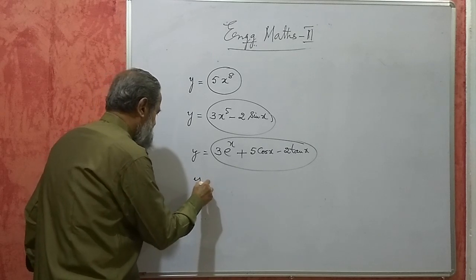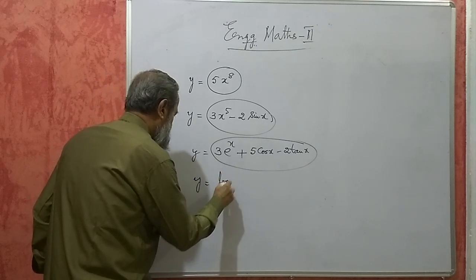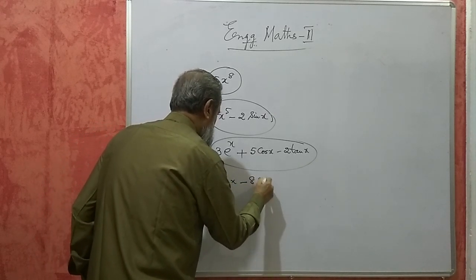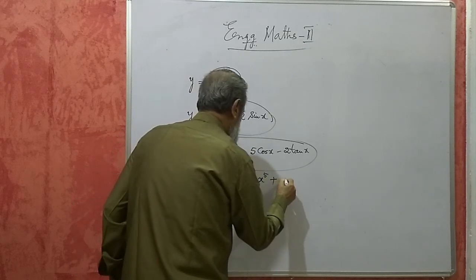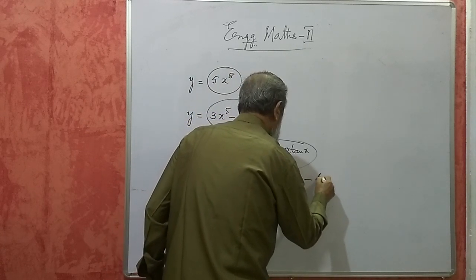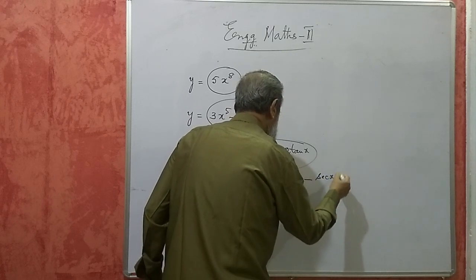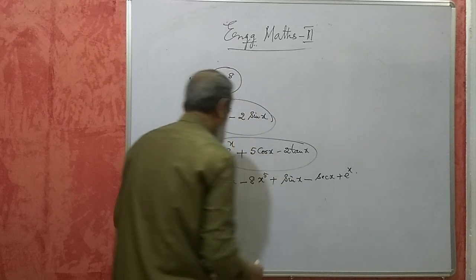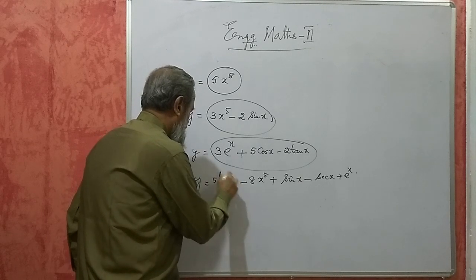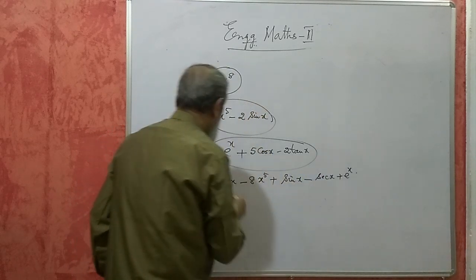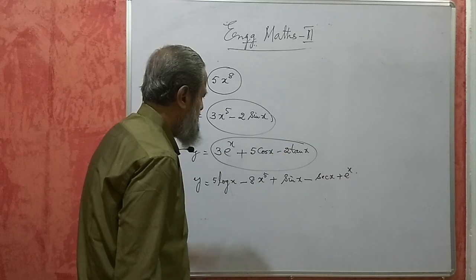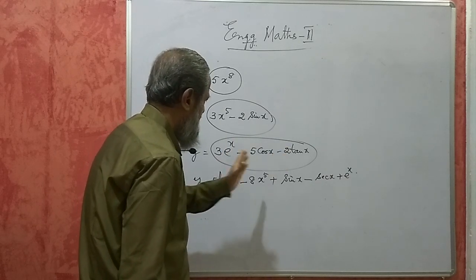If I have more than this — say log x minus 8x to the power of 5 plus sin x minus secant x plus e to the power of x — here there are 5 terms. If it exceeds 3, you call it as a polynomial expression. So: monomial, binomial, trinomial, and polynomial (more than 3 terms).